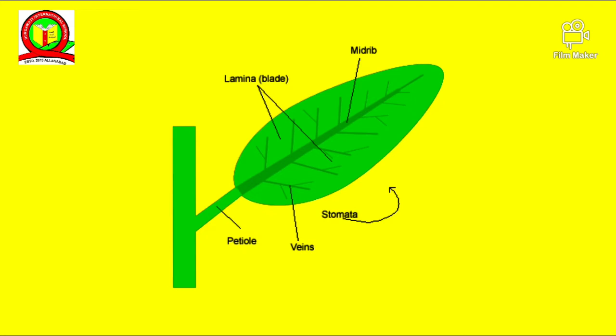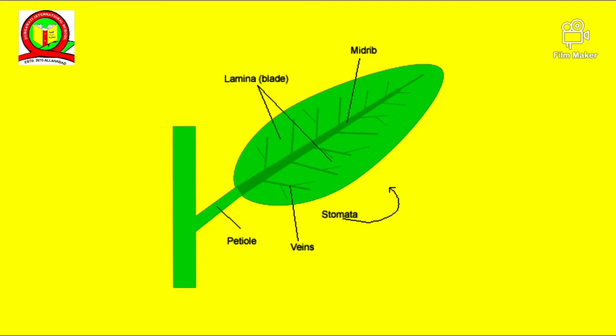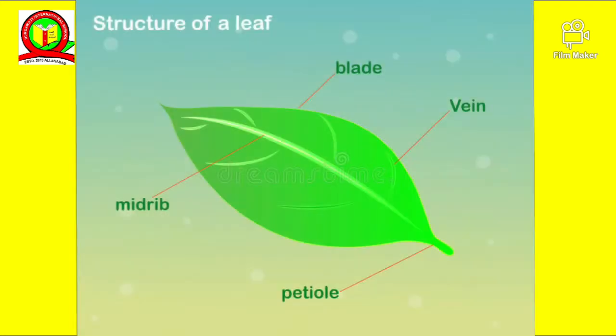Look carefully. You would find patterns of lines on the lamina. These lines on the lamina of the leaf are called the veins. Observe carefully — there is a thickest vein in the middle of the leaf. It is called the midrib.